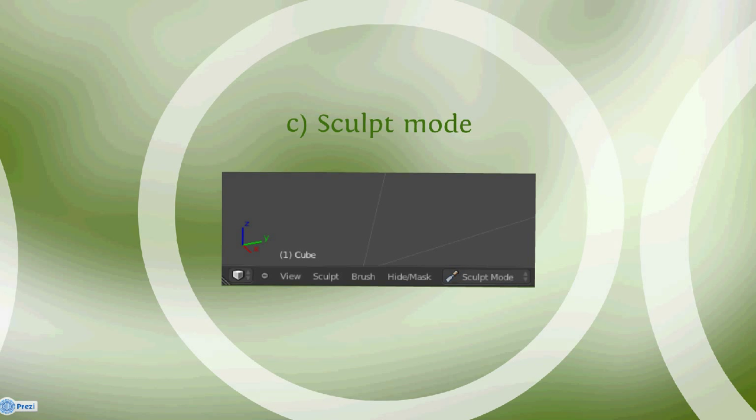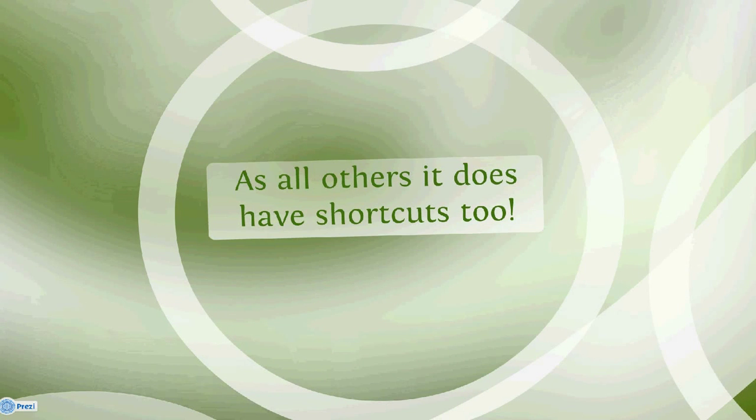Okay, the third one. Sculpt Mode. Sculpt Mode is no exception. As all others, it does have shortcuts too, but it's hard to find people who use them because there is a big selection menu which everybody uses. I think that after Edit Mode, shortcuts are the most important thing when in Sculpt Mode. Why Sculpt Mode? Because here you experiment the most.